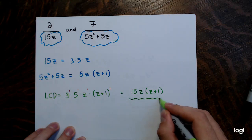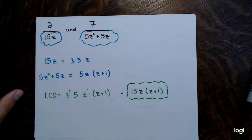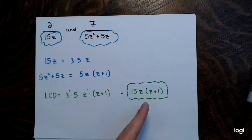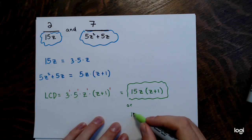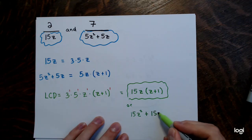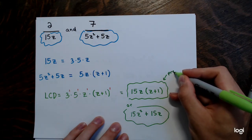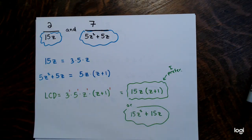You can leave the LCD in factored form — 15z(z plus 1) — or distribute it to get 15z squared plus 15z. I prefer leaving it in factored form because when we later add and subtract fractions, the factored form makes subsequent simplification much easier.